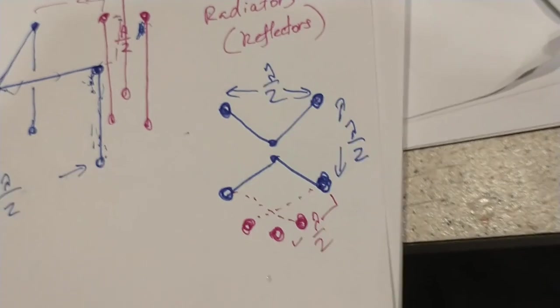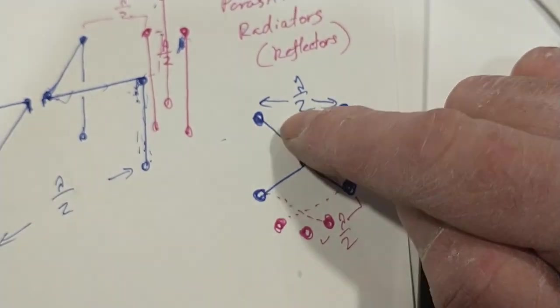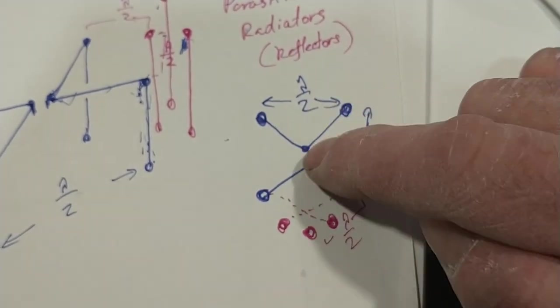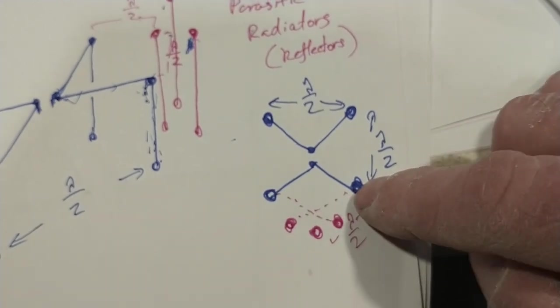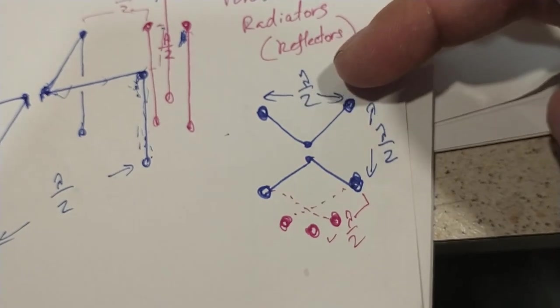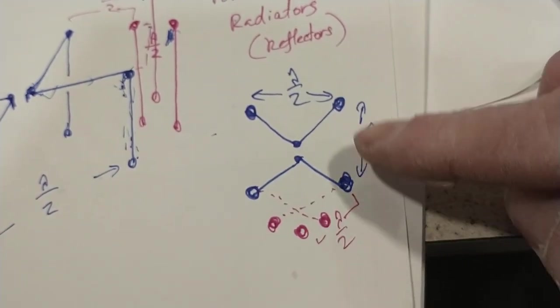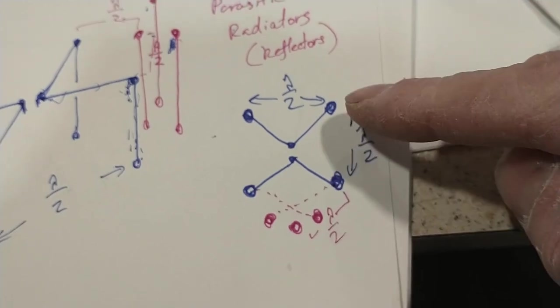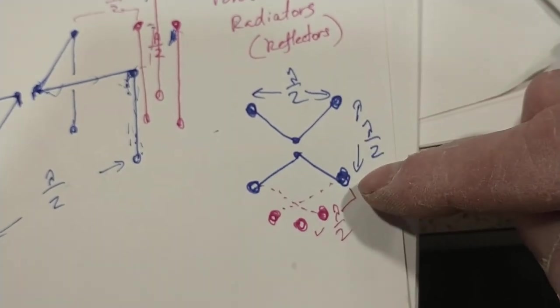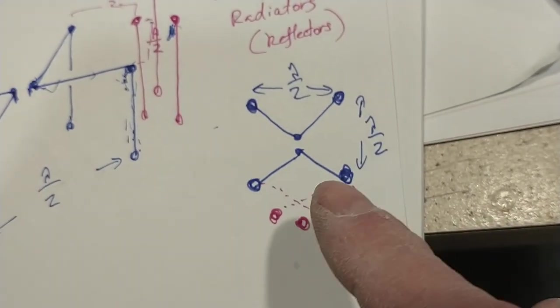Now looking directly down on the system, this is the lines that run to the two front vertical elements, and this is the lines that run to the two rear vertical elements. The spacing between the two front vertical elements—there's a half wave space between the two sides. Front right and rear right, there's a half wave spacing, and same on the other side.